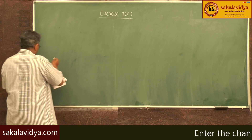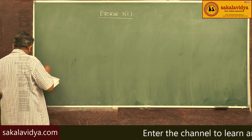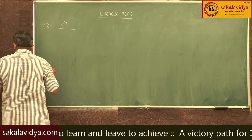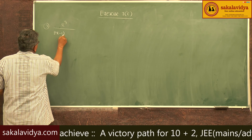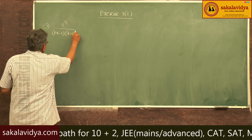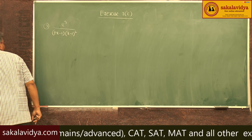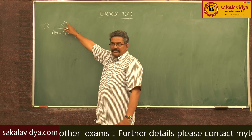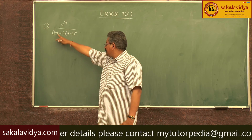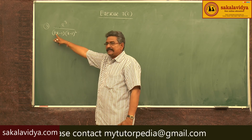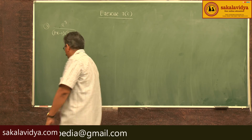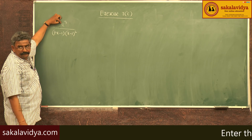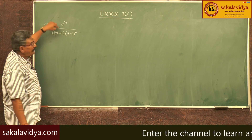Third problem: x cube by (2x minus 1)(x minus 1) whole square. In this problem, the degree of the numerator is 3. The degree of the denominator is also 3, since x squared into 2x means 2x cube. So the degree of numerator by degree of denominator gives 1 by 2.